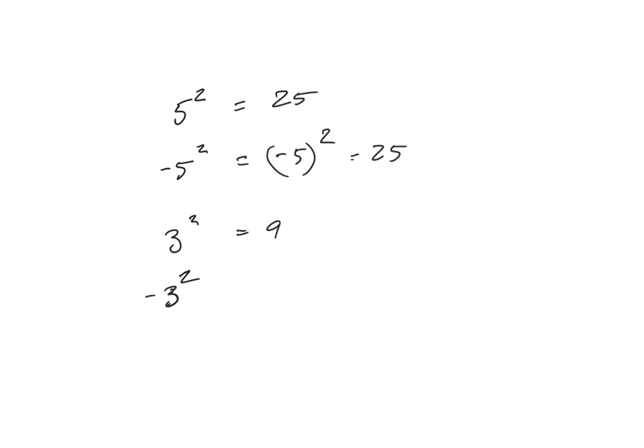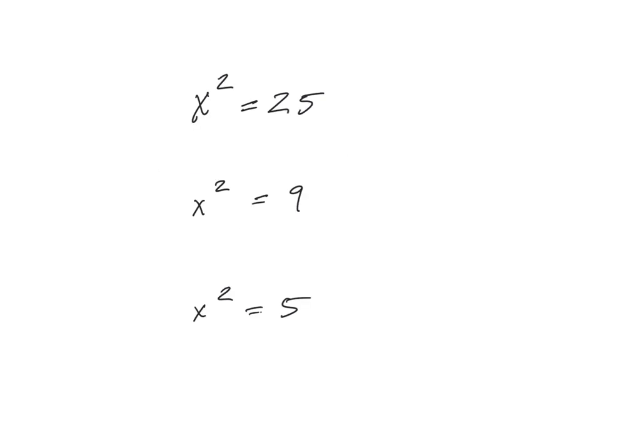3 squared is 9. Negative 3 squared, again, should be written like this — get in the habit of doing that. Also 9. So we move to this next idea of saying, okay, now we're going to solve for x squared.